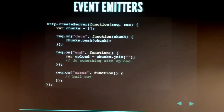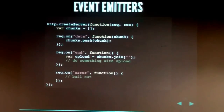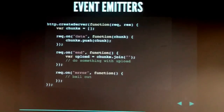Similarly, 'end' is something that could happen when the stream is complete, and 'error' could happen if there was some problem in the transmission. So here's an example of something that actually has three different behaviors: giving you chunks, stopping the stream, and possibly having an error on the stream. Event emitters are great for that.